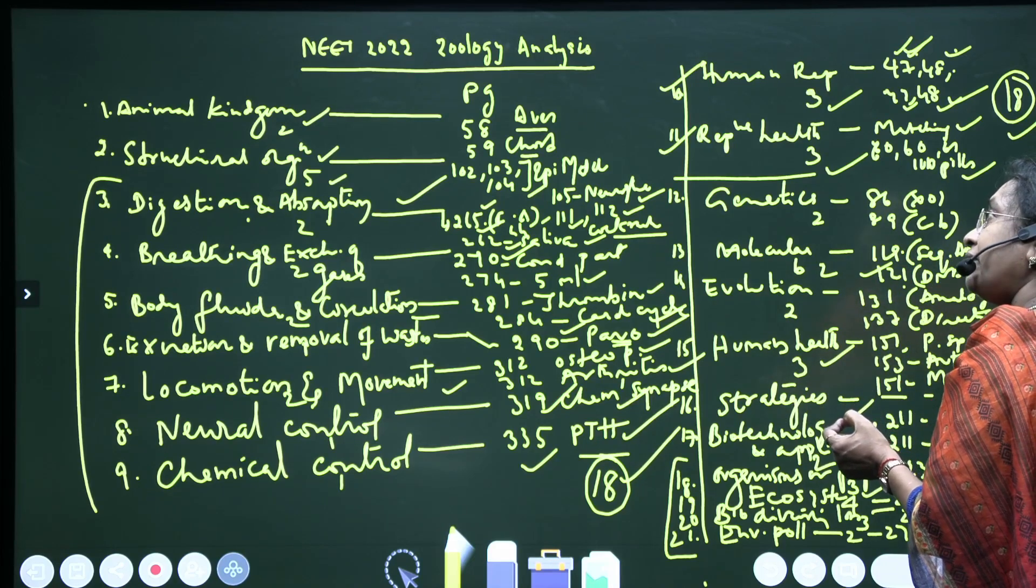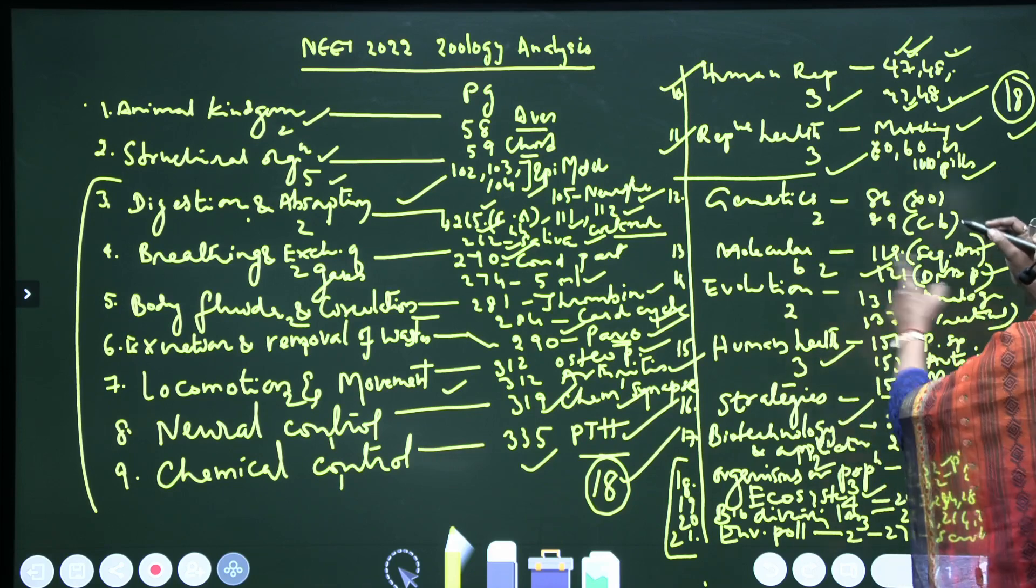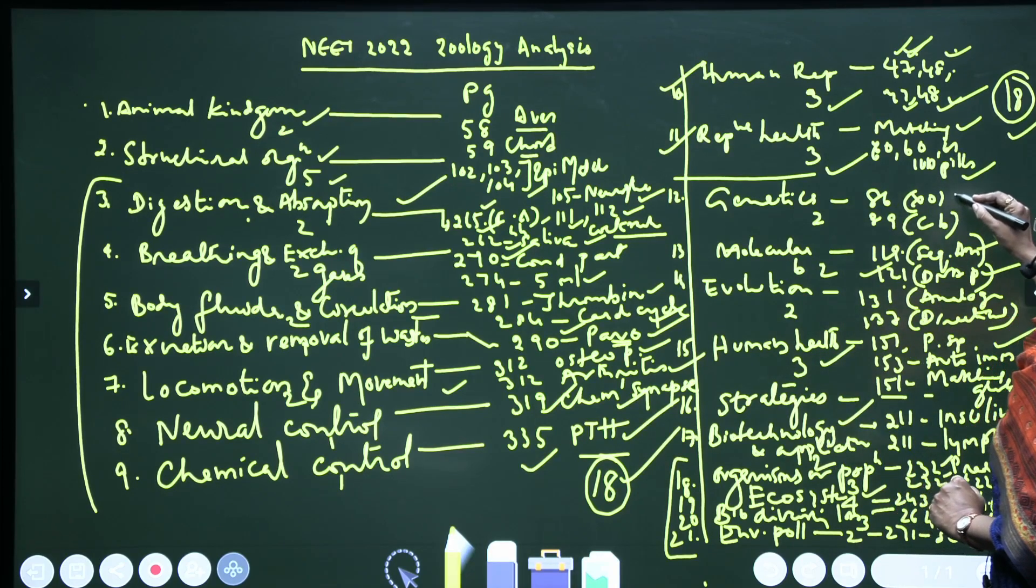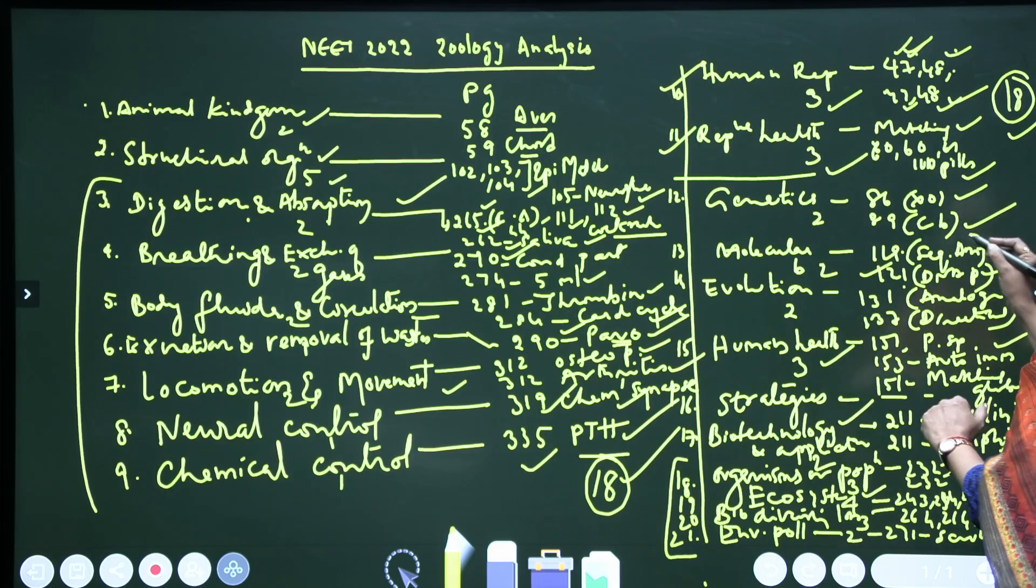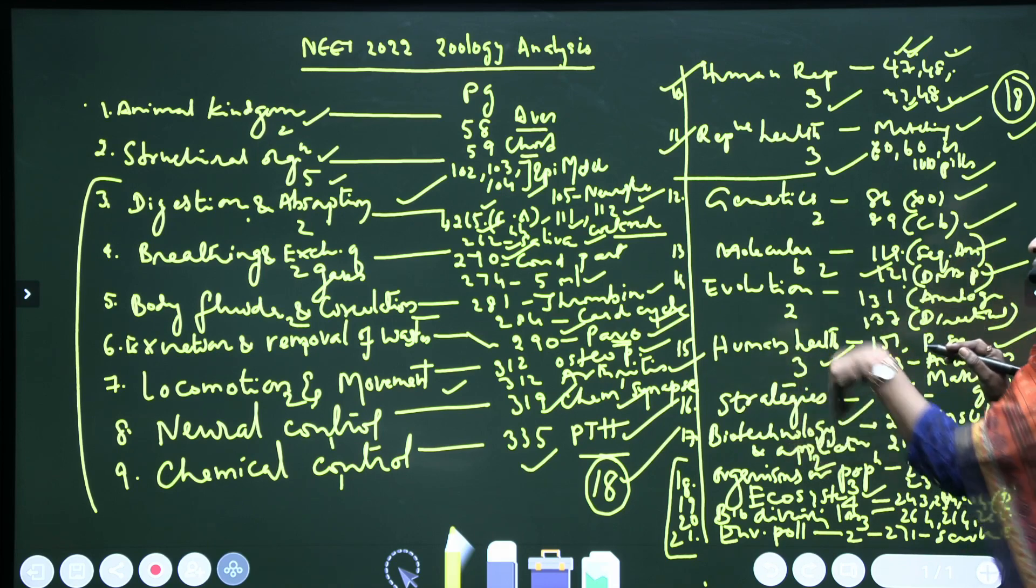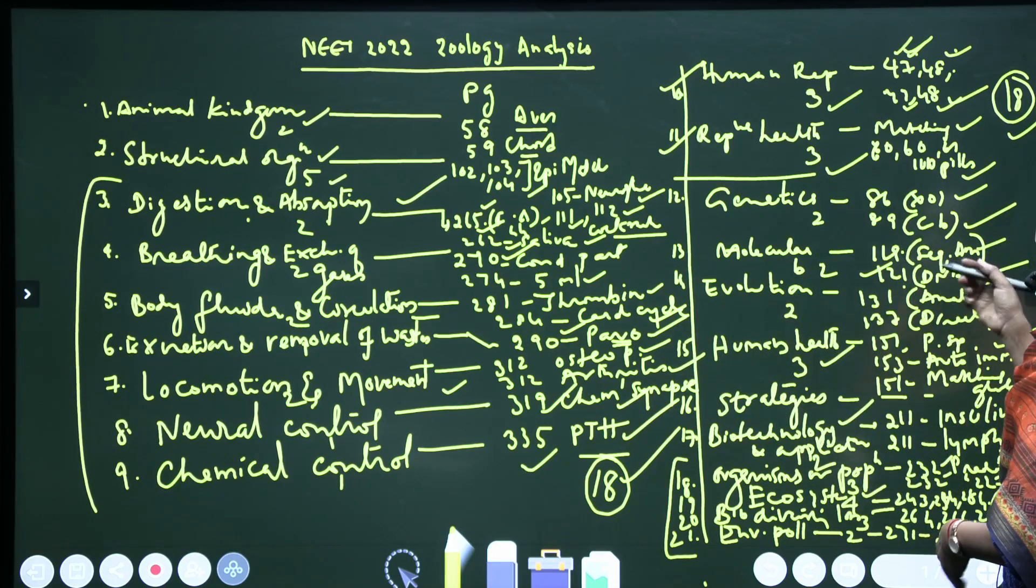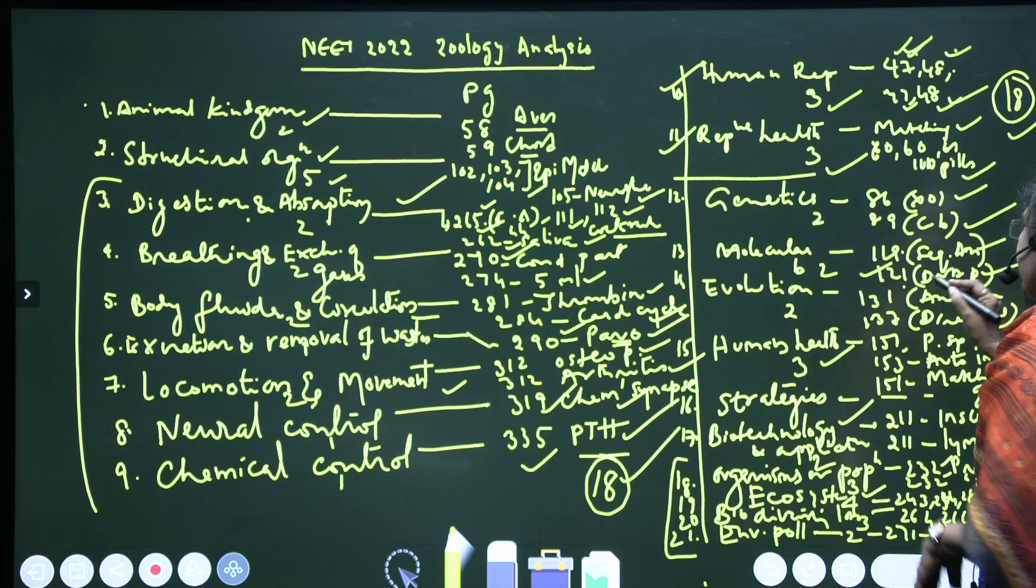Next, Genetics. Coming to Genetics, two questions are given from page 86: XO type of sex determination is found in grasshopper. And from page 89 also, it has been given: color blindness - 100% of children are colorblind because mother is colorblind and father is colorblind.